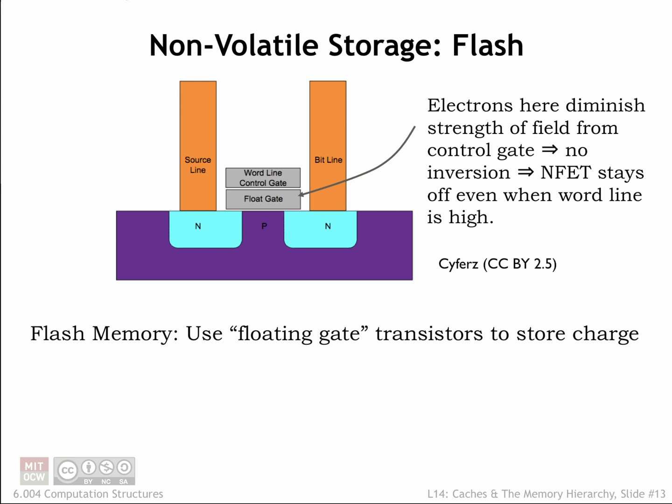The floating gate is incorporated in a standard MOSFET placed between the MOSFET's gate and the MOSFET's channel. If there is no charge stored on the floating gate, the MOSFET can be turned on — i.e. be made to conduct — by applying a voltage V1 on the gate terminal, creating an inversion layer that connects the MOSFET's source and drain terminals.